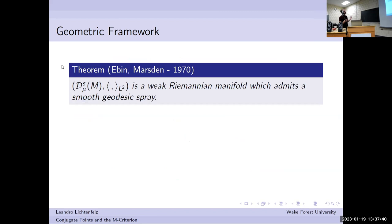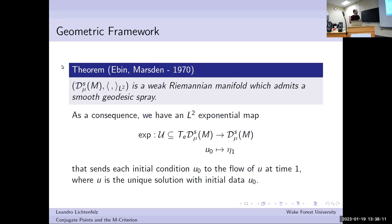Ebin and Marsden in 1970 put this on a firm analytic background and proved, among many things, that this is actually a weak Riemannian manifold which admits a smooth geodesic spray. That was one of the things Steve was talking about on Tuesday in the discussion session. What that really means is you have smooth geodesics at least for a short time. As a consequence, we have what we call an L2 exponential map.